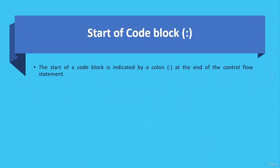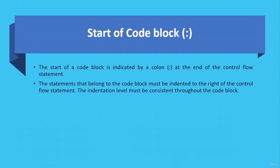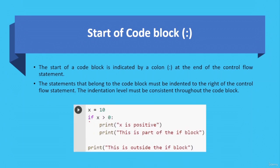The start of a code block is indicated by a colon at the end of a control flow statement. Statements belonging to the code block must be indented to the right of the control flow statement, and the indentation level must be consistent throughout the code block. For example, after the if statement you can see the colon, which indicates the start of the if code block. The two indented lines are part of the if block, and the last line is outside due to its different indentation level.